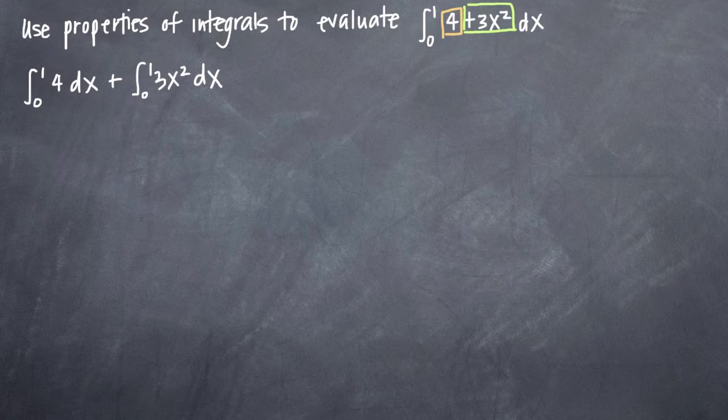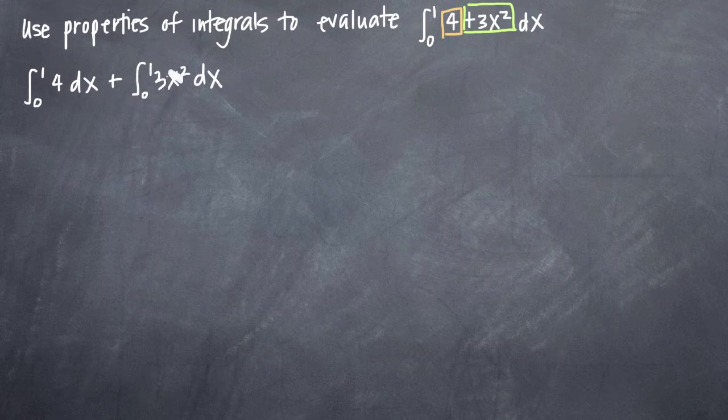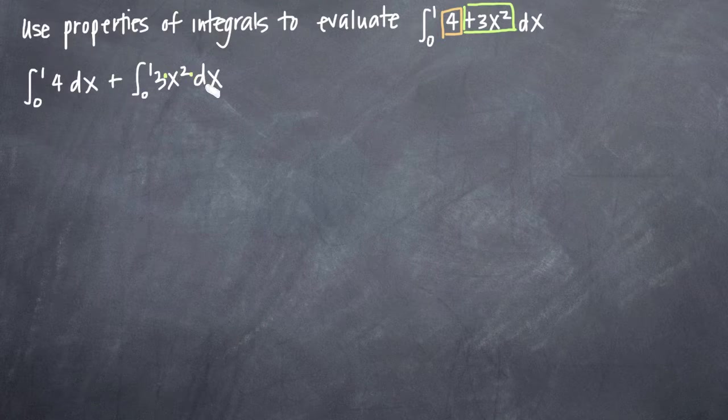Our second property is that we can pull constants out in front of our integral. For example, whenever everything is multiplied together inside an integral as we have here, we have 3 times x squared times dx.